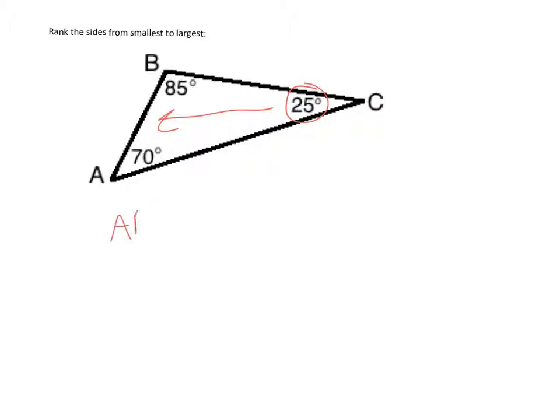So that means segment AB is the smallest of these. And again, the way I know it's across, 25 degrees is made up of these two sides, so it's the third side that we say is across from it. And the next is 70 degrees, so segment BC is across from that. And 85 degrees, segment AC is across from that.